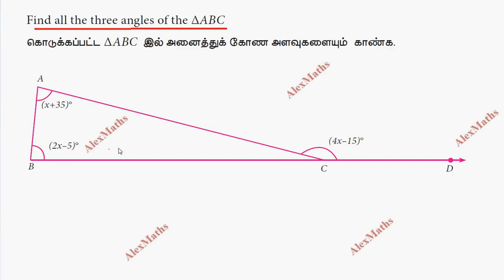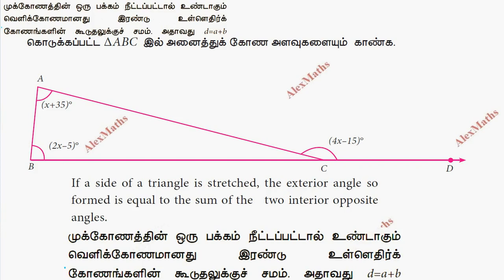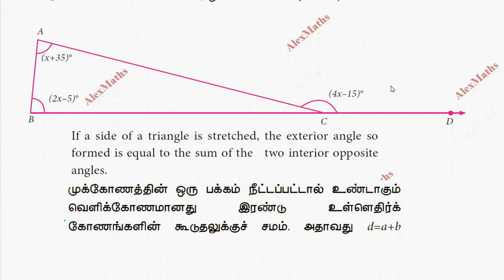If you look at the rule, one exterior angle is equal to the sum of the two interior opposite angles. This is the exterior angle.